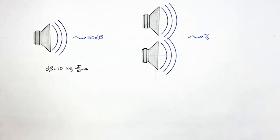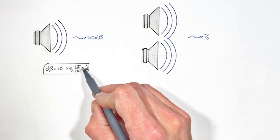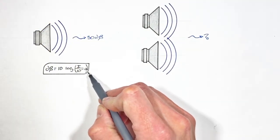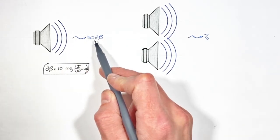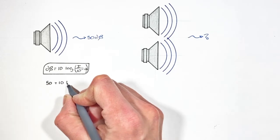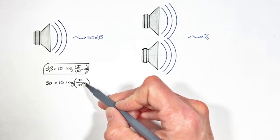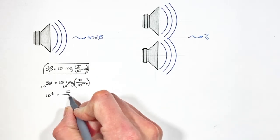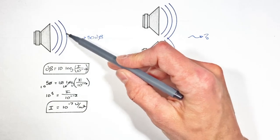Now, decibels and intensity are related through this equation. So if we know that a speaker is producing 50 decibels of sound at some distance, we can solve for the intensity of that sound, and we find the intensity of this speaker at some distance is going to be 10 to the minus seventh watts per meter squared.